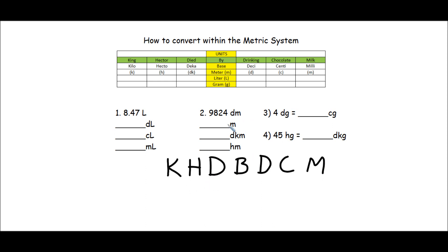Also, a quick note — you're probably wondering how do I know which D is which? Deca and deci are easy to discern because all the ones to the right of by — deci, centi, and milli — that's one way you can remember where they are placed. Now that we have the chart, let's figure out how to convert. I know that liters is a base unit because it's right here under by.